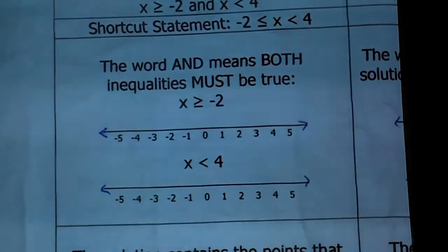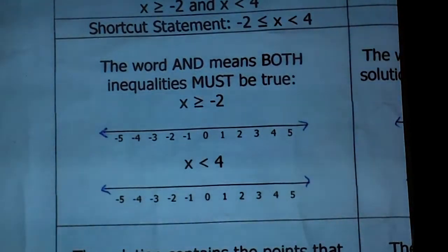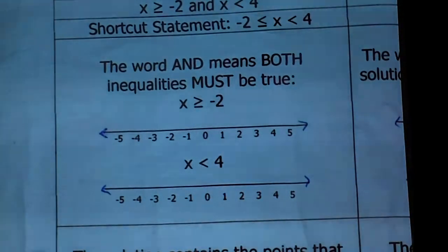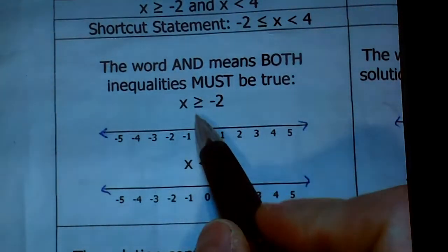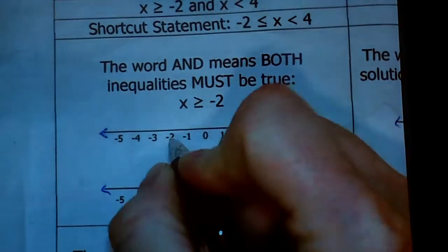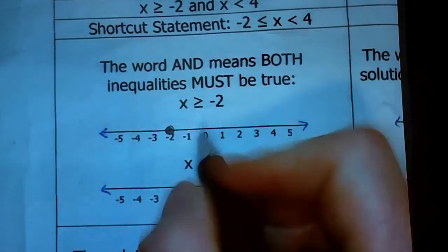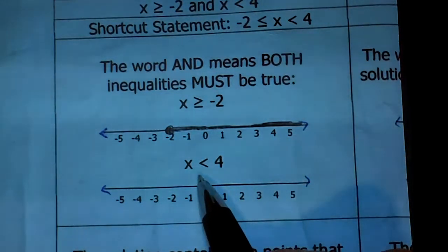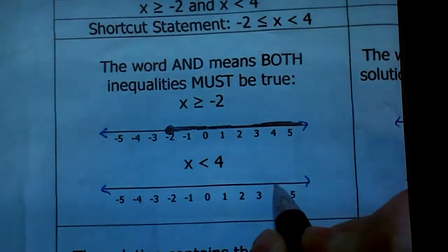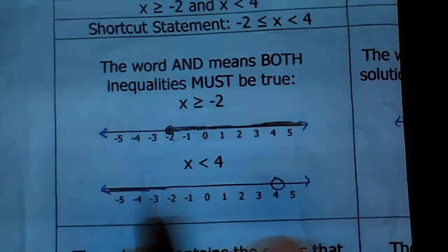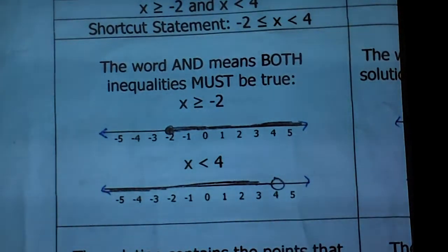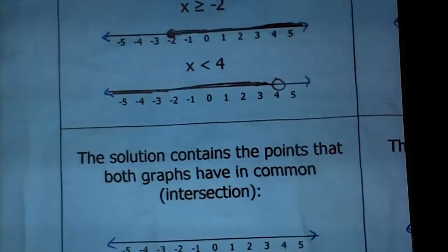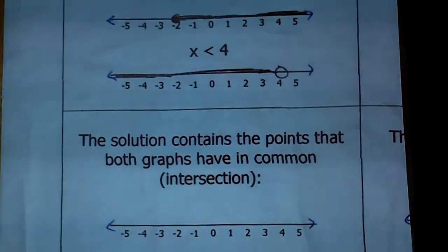The word 'and' means both inequalities must be true. Let's start by graphing each separately. It says x is greater than or equal to negative 2, meaning x can be negative 2 or all the values greater. The other says x is less than 4, so it can't be 4 but can be all values less than 4. When you graph the 'and,' the solution contains the points that both graphs have in common — or where they intersect.